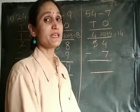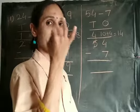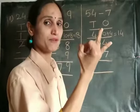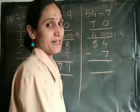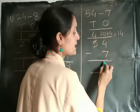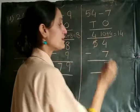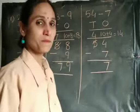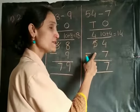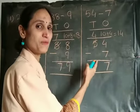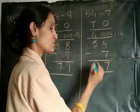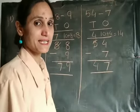Count from 7 to 14: 8, 9, 10, 11, 12, 13, and 14 — that is 7. So write down 7 in the 1s column. Go to the 10s column. 4 minus no number, so 4 minus 0 is 4. So the answer is 47.